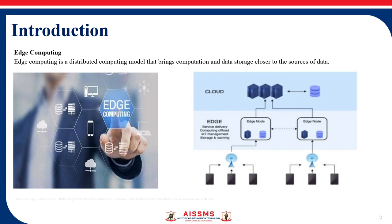The edge is where the device communicates with the internet. The edge can be a router, it can be an ISP, it can be routing switches, integrated access devices, multiplexers and so on. The most significant thing about the network edge is that it should be geographically close to the device.